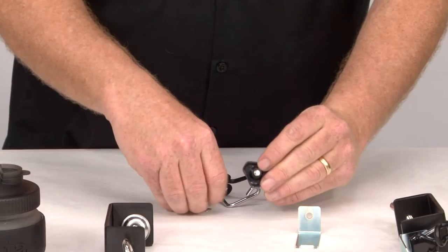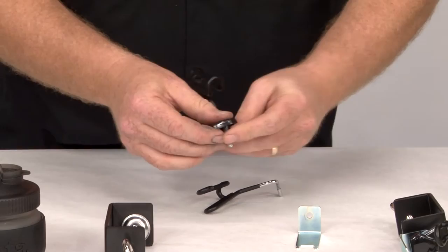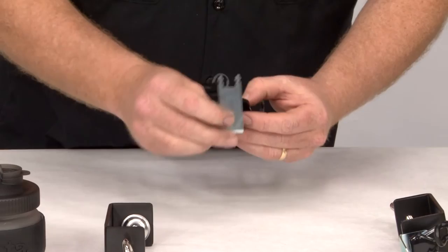So we take our mounting bolt, take our lock washer, put those together. Make sure you assemble this on a deep carpet so you can lose your parts - that's what I do.